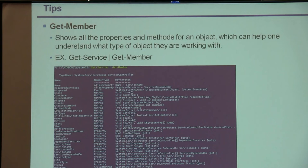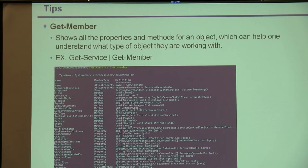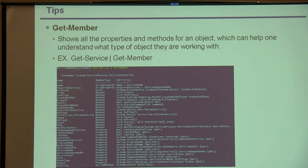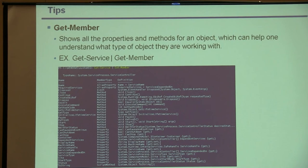Another useful item is get-member — it shows the properties and methods for an object, and it'll help you understand what that object you're working on can do. For example, if you use get-service and then pipe it — the pipe is Shift and the backslash key, typically right above the Enter key — and then do get-member, it'll pull up all the properties for get-service. Just do that on your own PowerShell and you'll see there are lots of different properties you can use against that.